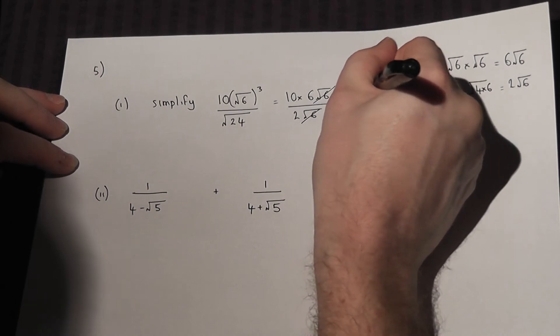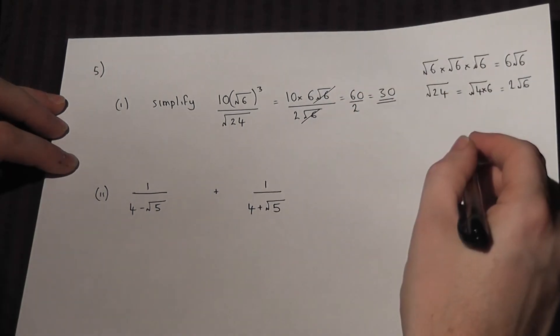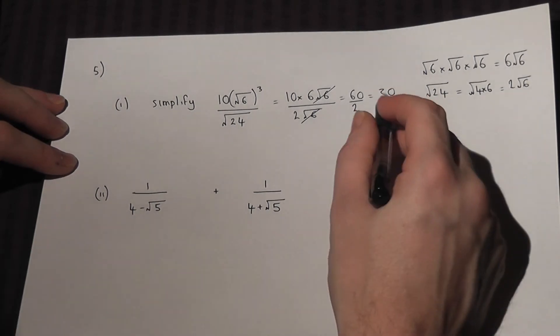Which is 60 over 2, which equals 30. So the final answer is an integer.